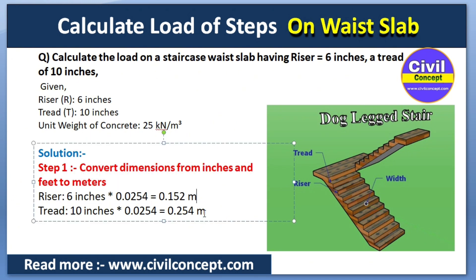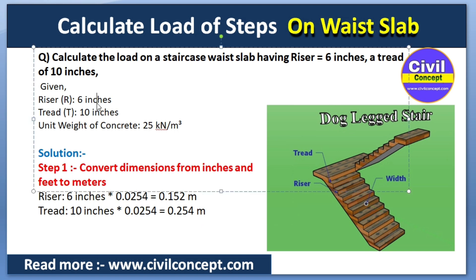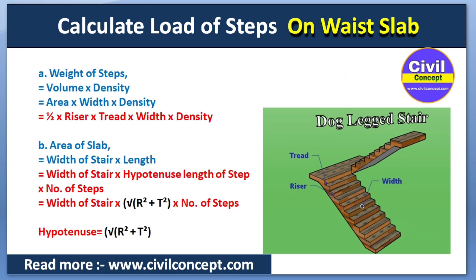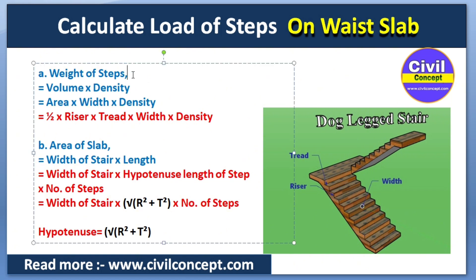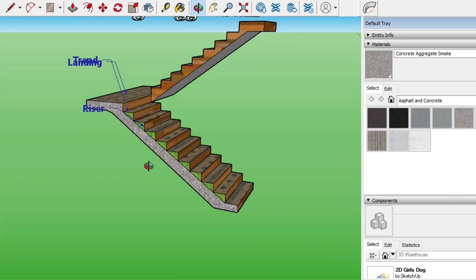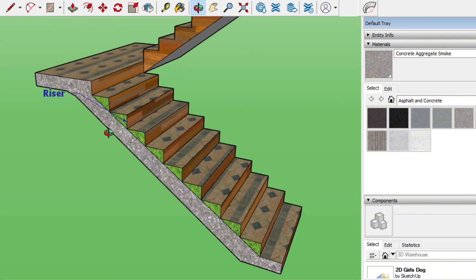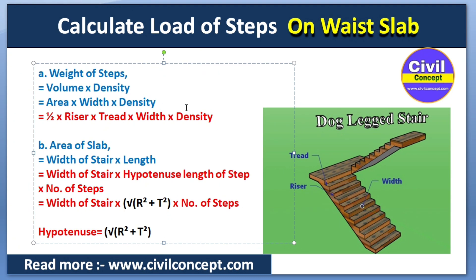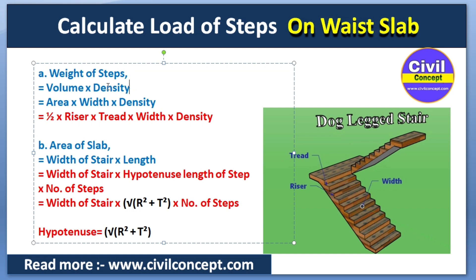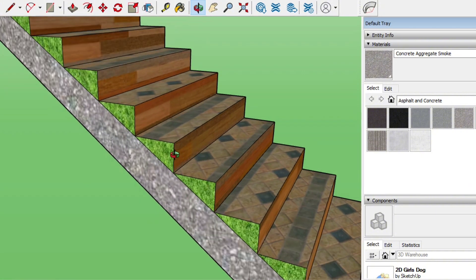After conversion, we get a riser of 0.152 m and a tread of 0.254 m. In step two, we calculate the weight of the steps and the area of the slab. First we calculate the weight of all the steps, then the area of the slab. Dividing the load of the steps by the area gives us the load per meter square. To find the weight of the steps, we multiply volume by density, and volume is calculated by multiplying the cross-sectional area by the width of the steps.